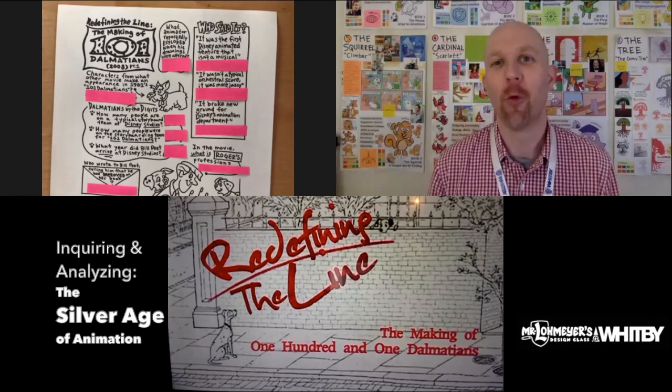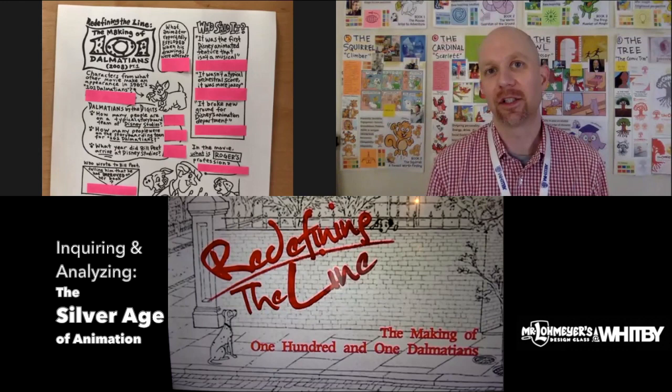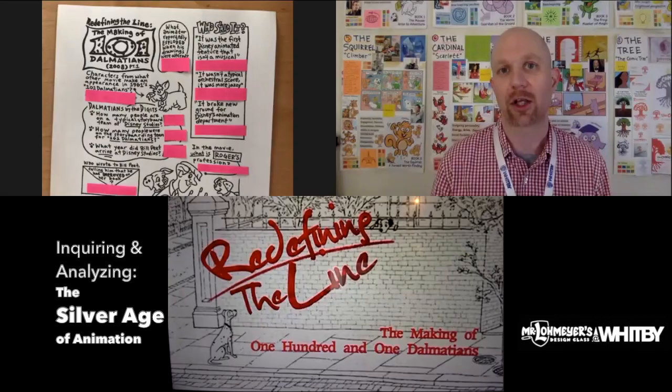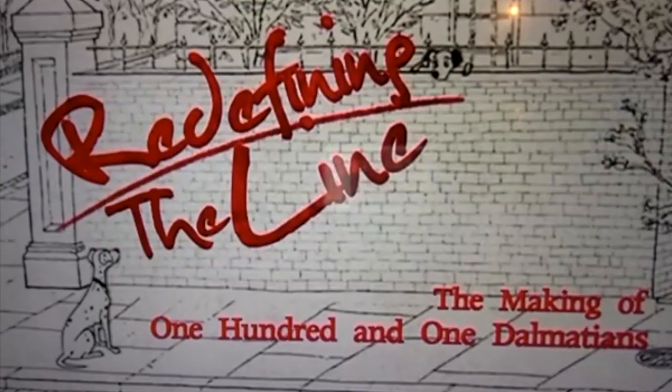Hey guys, welcome back. We're here with the seventh grade reviewing the Silver Age of Animation and specifically the film 101 Dalmatians from 1961. In just a few minutes we're going to be joined with a bunch of seventh graders, but I just wanted to introduce the film to you. Go check out the documentary — it's on YouTube. It's called Redefining the Line: The Making of 101 Dalmatians.